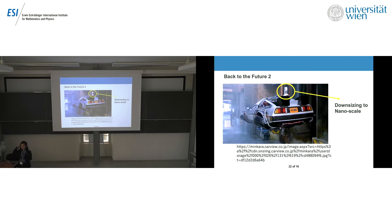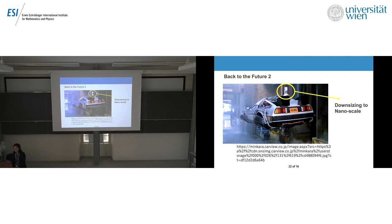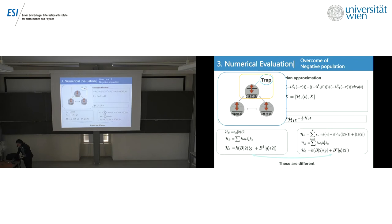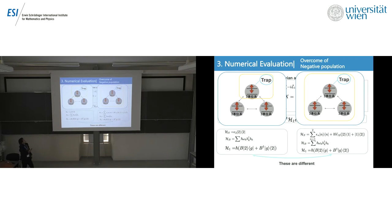A question asked why negative populations appeared in the master equation and whether it was due to the negative correlations or the triangular structure. The answer: initially only the interaction between site 3 and the trap site was included, which caused negative populations. After including all interactions among the sites to derive the trap generator, the negative populations disappeared.